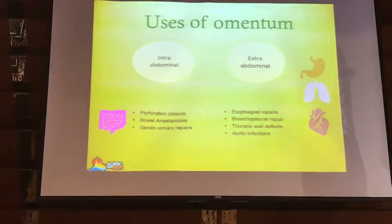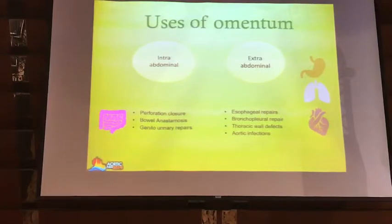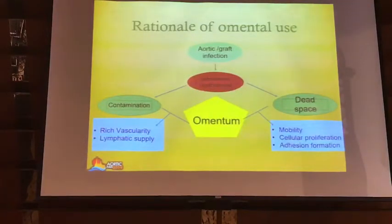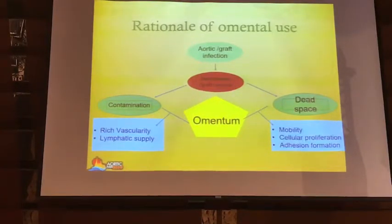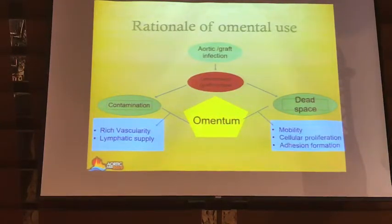Other than all the uses of omentum, the one which is very useful is in very bad aortic infections. It has rich vascularity and lymphatic supply, it is mobile, it promotes cellular proliferation, it is a viable and live graft, and it induces adhesion formation.